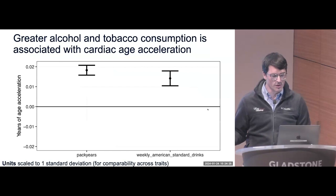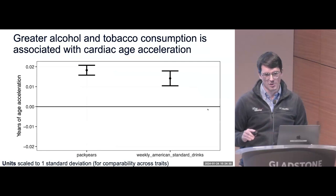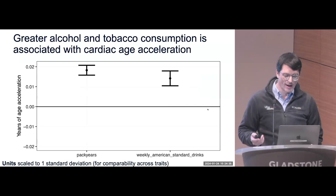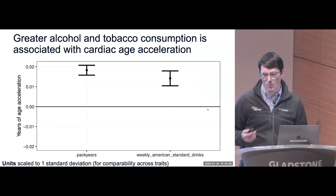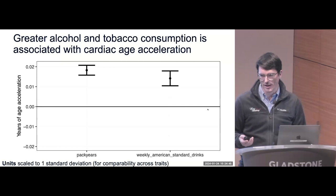We can also look at behavioral associations. With non-smokers and non-drinkers as the zero baseline, the left x-axis shows pack years of smoking and the right shows standard American drinks per week. People who smoke more and drink more appear to have accelerated cardiac aging.